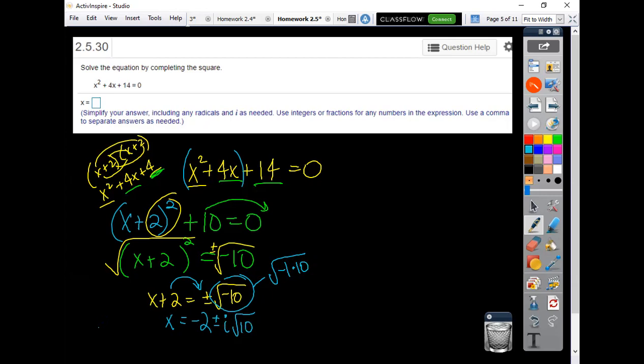So I'd have negative 2 minus i square root of 10 for one answer and negative 2 plus i square root of 10 for the second answer.